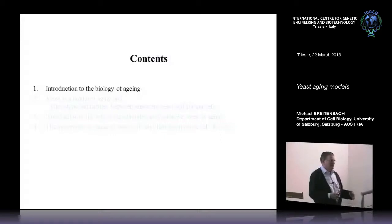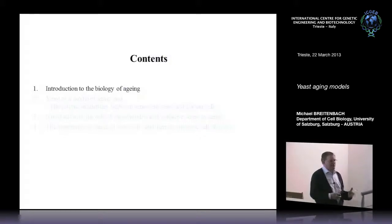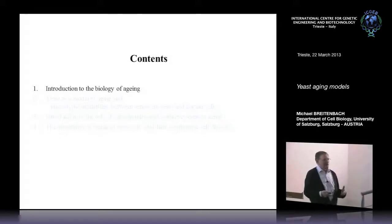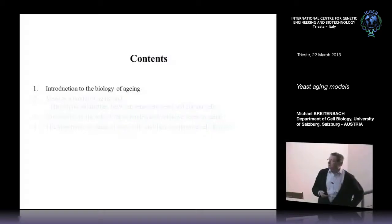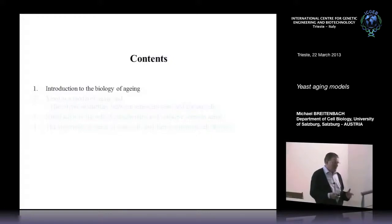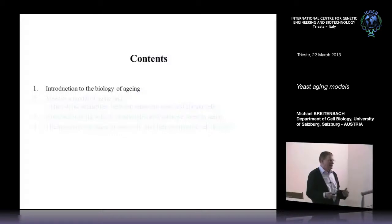Replicative aging in yeast models stem cell aging in humans. On the other hand, post-mitotic aging — which is also very important in humans for certain cells like the most important neurons of the central nervous system — is also closely mimicked by post-mitotic aging in yeast. The fourth part covers the role of asymmetric segregation of damaged material, which was really discovered in yeast and is a very important and general concept.